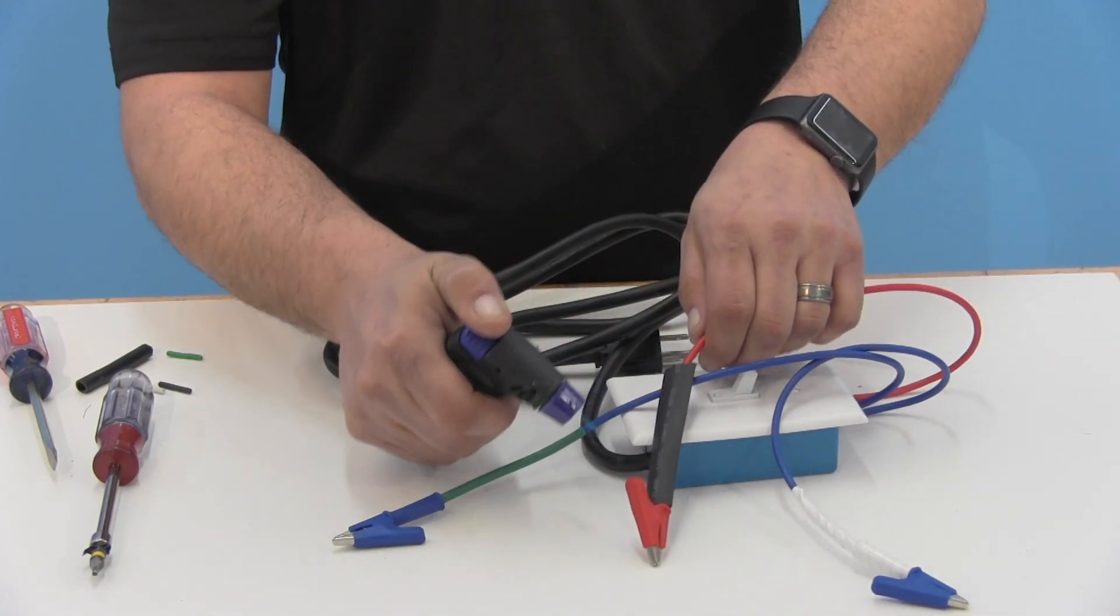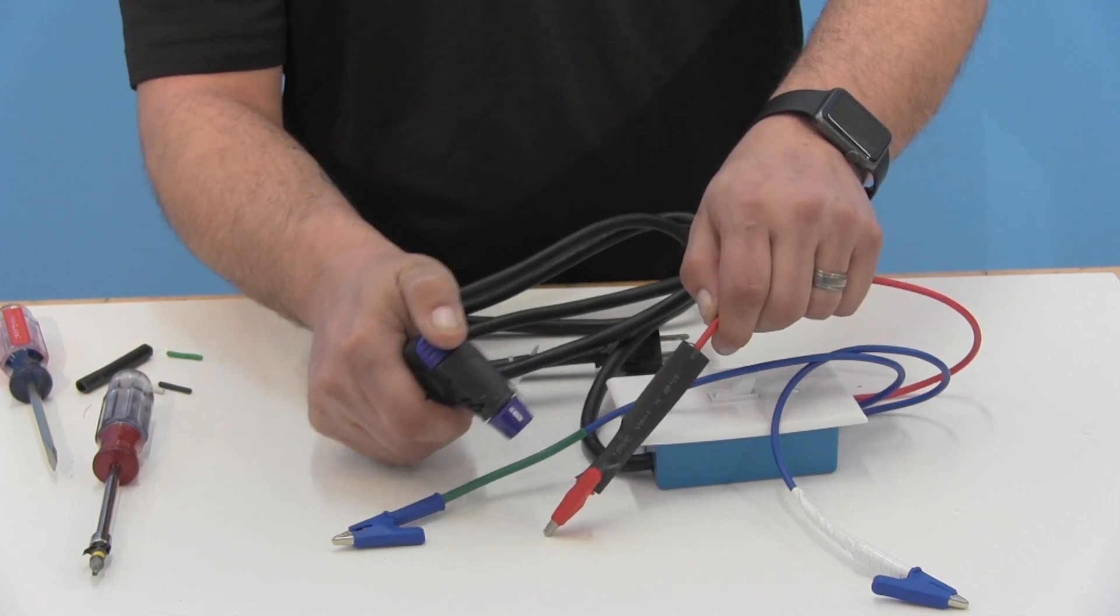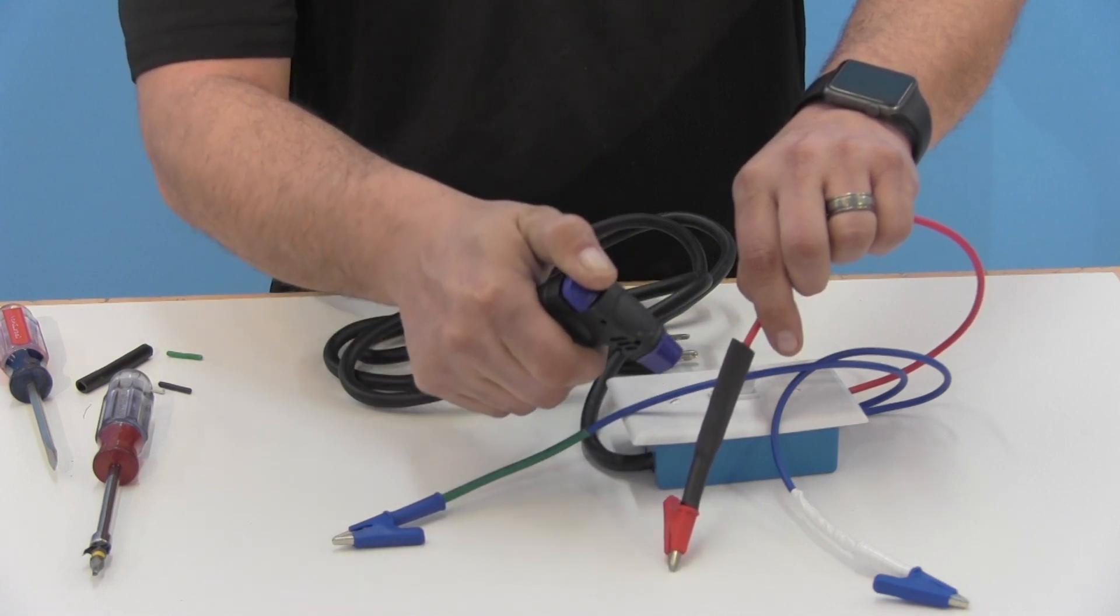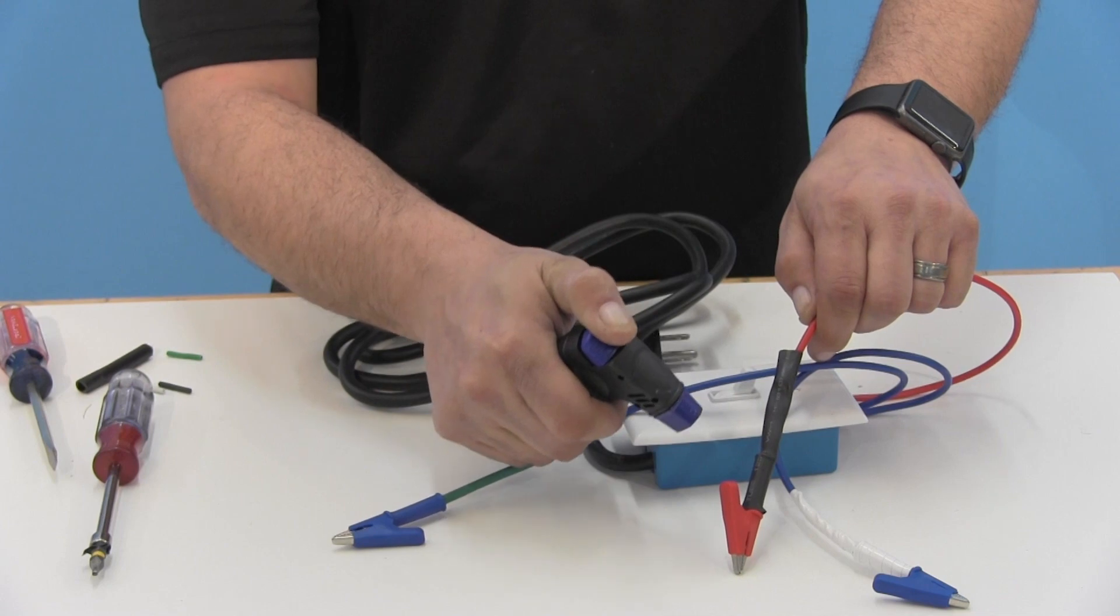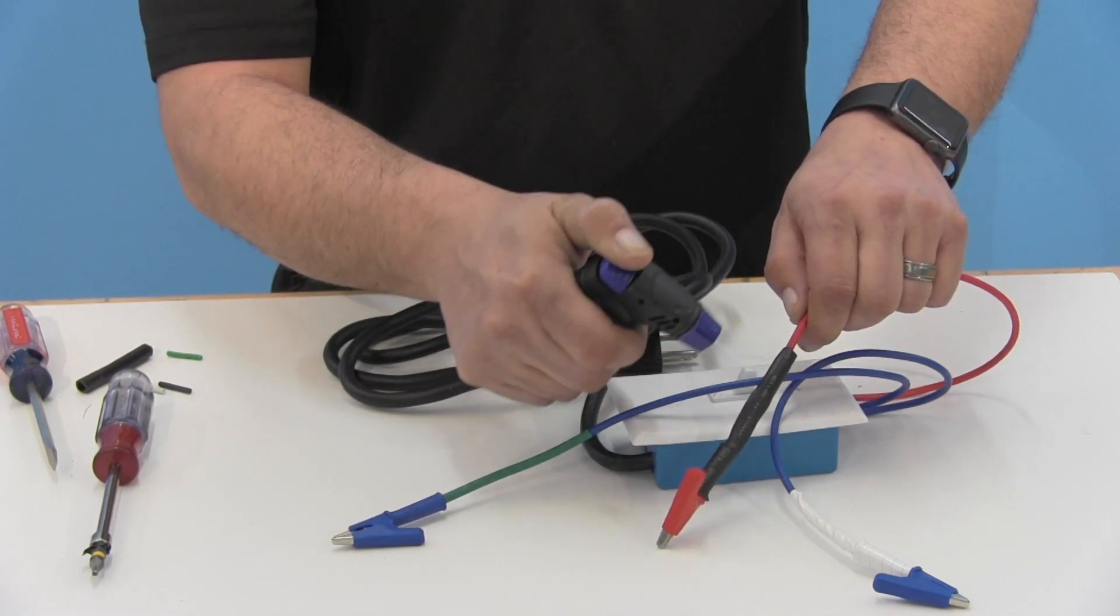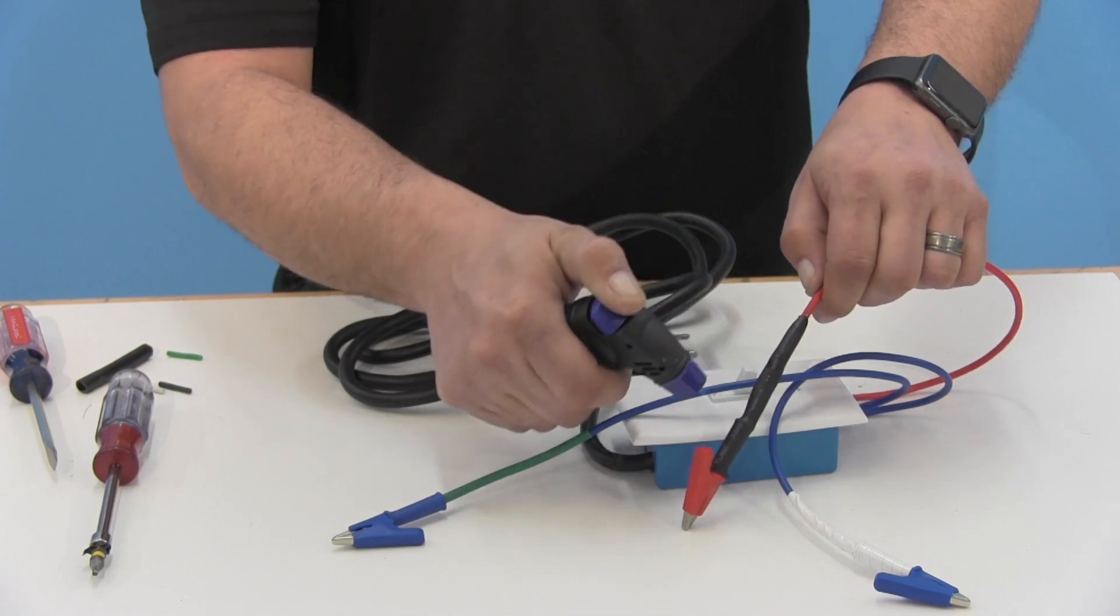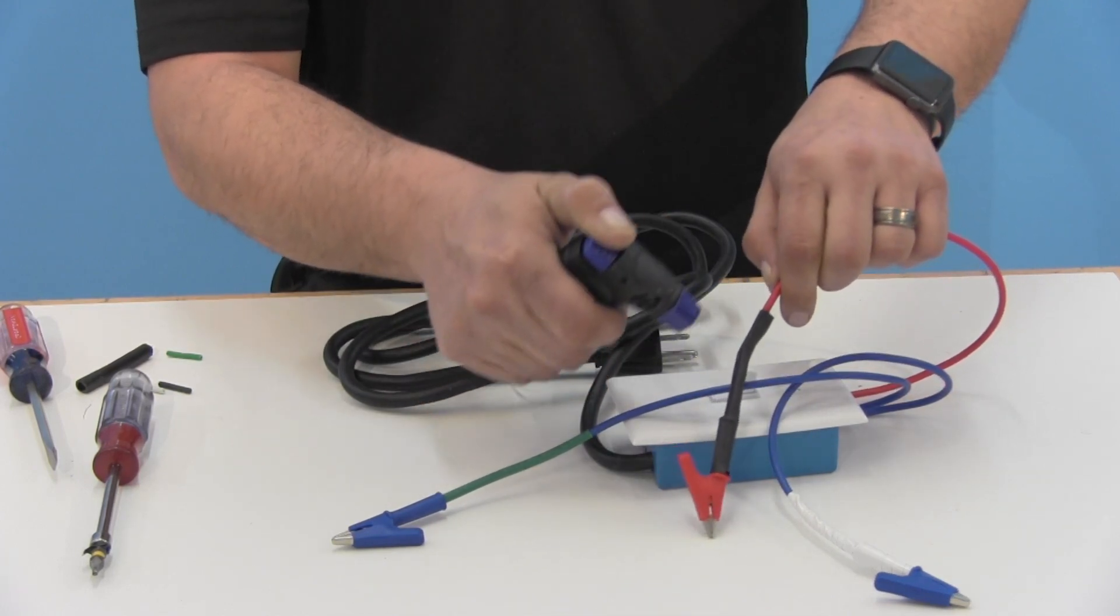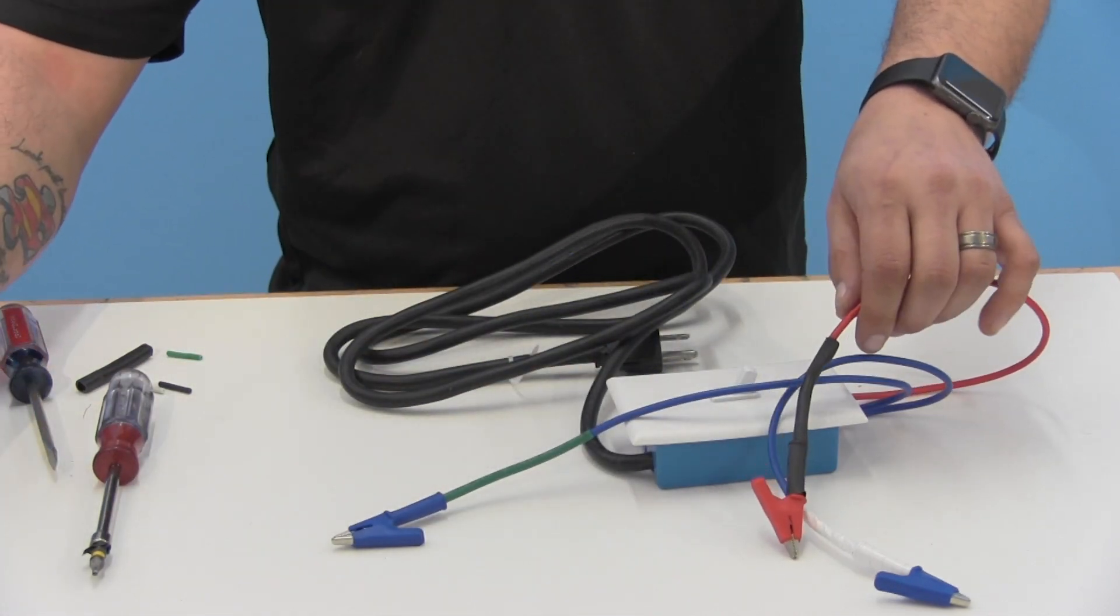And the same thing with the red. And it shrinks nicely just right around those wires. If you focus too long on one side, you'll end up melting and burning a hole through the heat shrink, damaging the wire. Let those cool down.